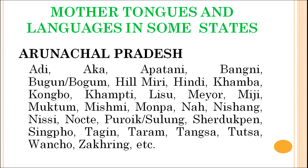Let us look at some examples of languages and mother tongues existing in different parts of India. In Arunachal Pradesh, for example, we have Adi, Aka, Apatani, Bangni, Bogun, Hillmiri, Hindi, Khamba, Kongbo, Khamti, Lisu, Mayor, Mizi, Muktam, Mishmi, Monpa, Na, Nishang, Nisi, Nokte, Puroik (Sulung), Shadukpen, Singpo, Tagin, Taram, Tangsa, Tutsa, Vancho, Jakring, and so on.